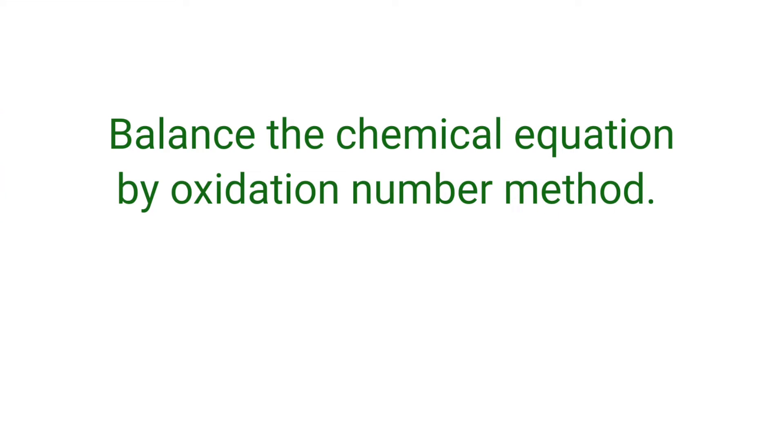Balance the chemical equation by oxidation number method. Potassium permanganate plus hydrogen chloride gives us potassium chloride plus manganese chloride plus water plus chlorine.